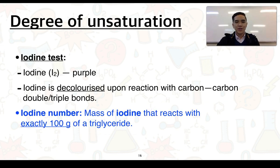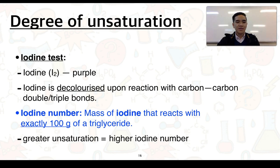Iodine is typically a purplish-brownish colour and is decolourised upon its reaction with any carbon-to-carbon double or triple bonds. To determine the degree of unsaturation, we can look at the iodine number. Like the bromine number, this is the mass of iodine that reacts with exactly 100 grams of a triglyceride. Again, the greater the degree of unsaturation, the higher the iodine number.